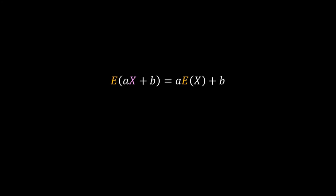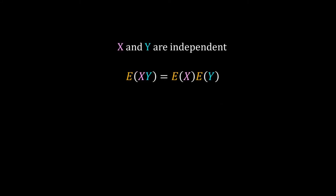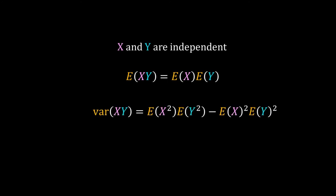There are several useful theorems for expected value and variance. For a random variable x, the expectation of aX + b, where a and b are constants, equals a times E[X] plus b, and the variance equals a² times Var(X). When x and y are two independent random variables, E[XY] = E[X] times E[Y], and Var(XY) = E[X²] times E[Y²] minus (E[X])² times (E[Y])².